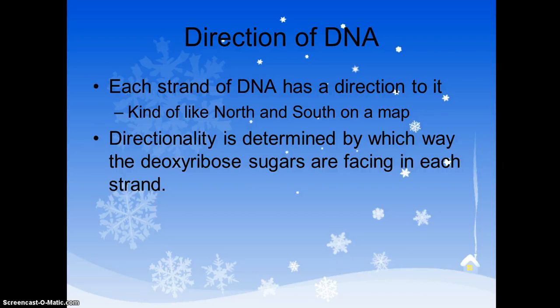This idea is a little confusing, so it might take some work for us to understand this. But each DNA has two strands. Each strand has a direction to it. Kind of like a map, how there's a north and a south. DNA has a north and a south on it. Directionality is determined by which way the deoxyribose sugars are facing in each strand. So jot that down and let me show you on a picture.